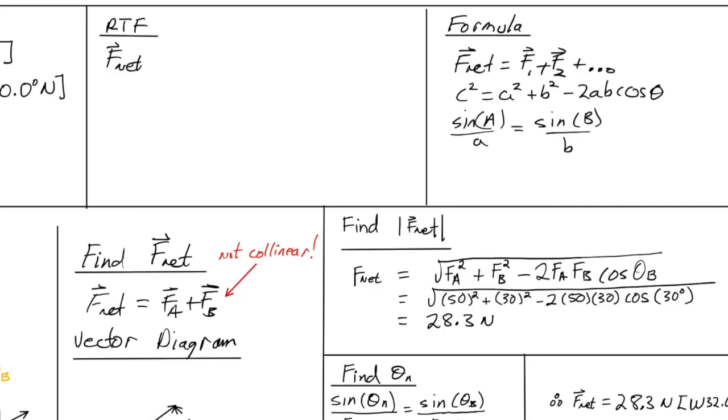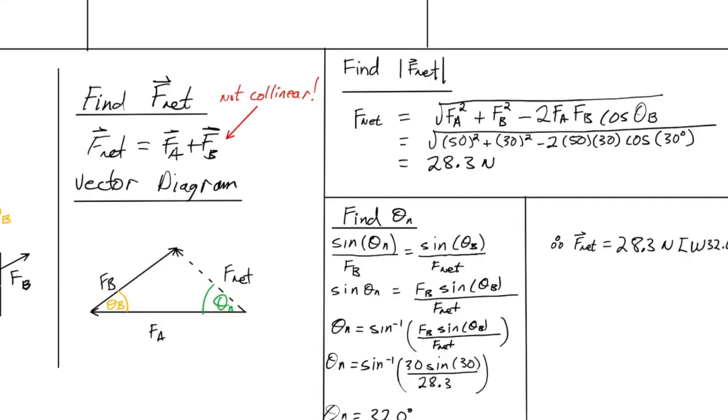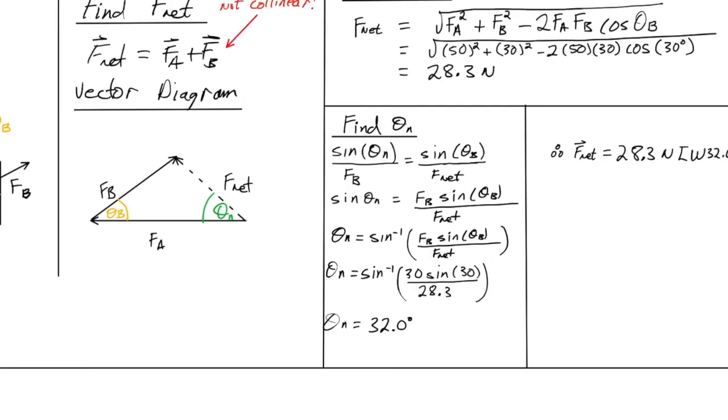When we substitute our values in, we get a magnitude of 28.3 newtons. So, the net force is 28.3 newtons, but we also need a direction, which is why we have to find theta N. The little N stands for the net force. In this case, I've chosen to use sine law. Well, why have I chosen to use sine law? Sine law is the easier of the two, but sine law does run the risk of giving you an obtuse angle, potentially.